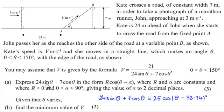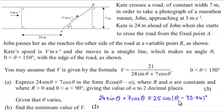Now in part A, we had to express 24 sine theta plus 7 cos theta — our denominator — in the form R cos(theta minus alpha). We did that, and we got the answer that it was identical to 25 cos(theta minus 73.74 degrees).